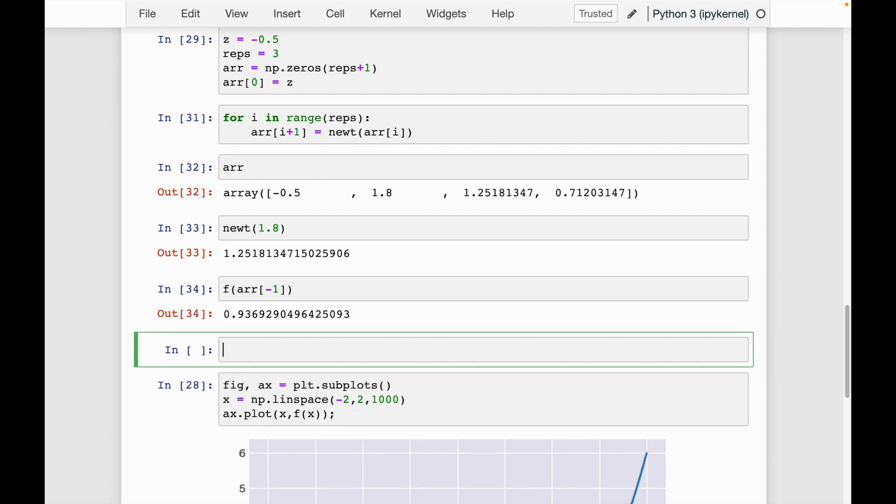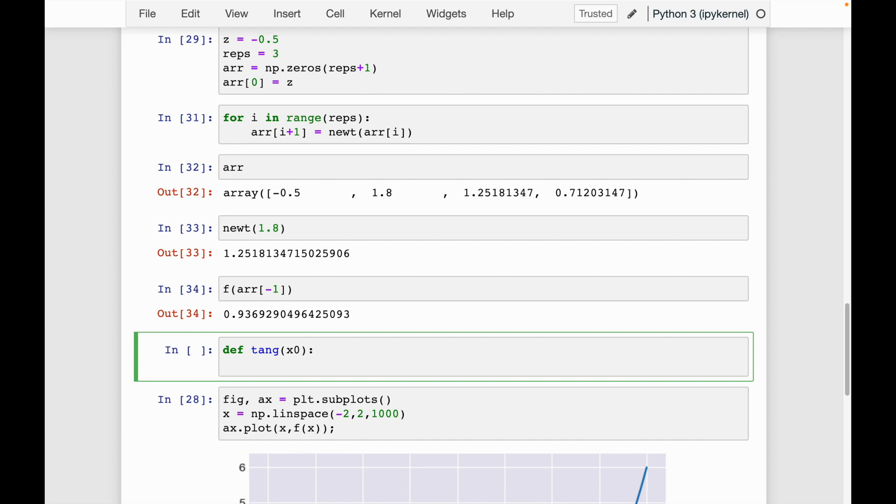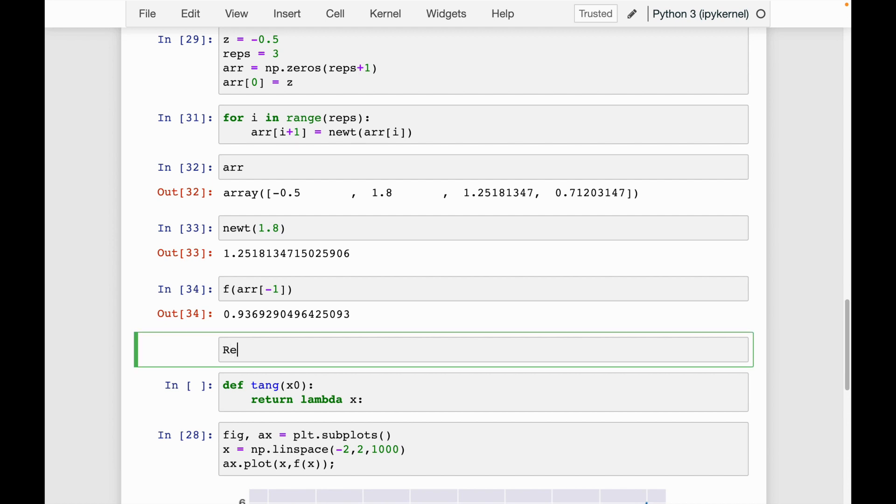So what I'm going to do is I'm going to write a helper function and I'm going to call it tang for tangent. As input, I'm going to have our point x naught and what I want it to return. So I want it to return a function. So I'm going to say lambda x. Now, if you remember from your calculus classes,